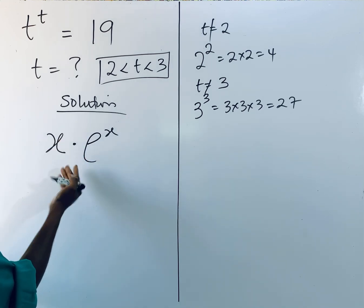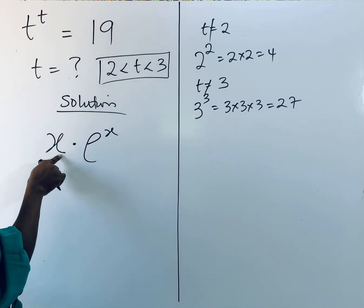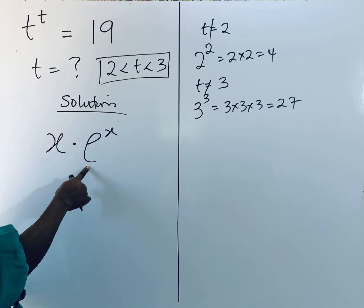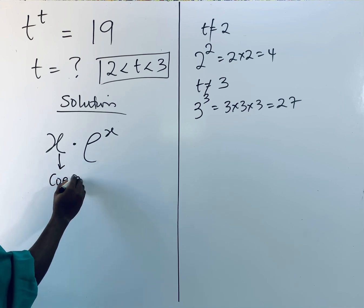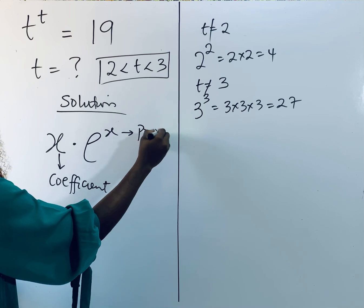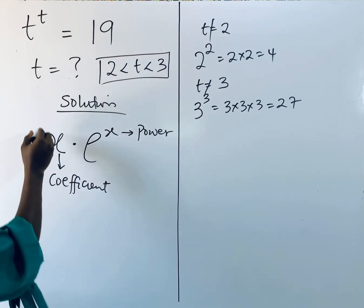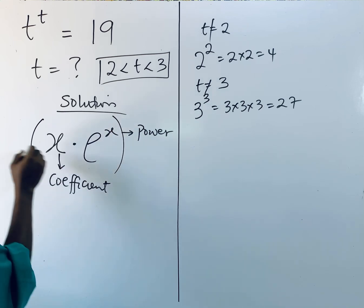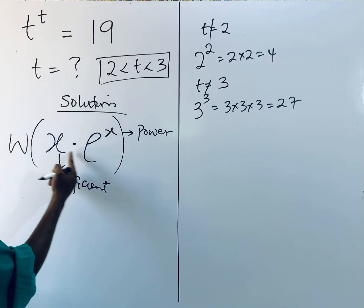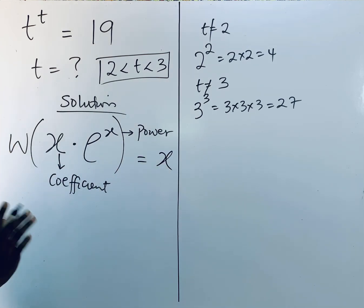It says that each time you have x multiplied by e to the power of x, this can be a function. Now when you have it this way, provided that the power of this e is the same with the coefficient of this e—remember this is the coefficient and this one is the power—when the power and the coefficient are the same, just quickly introduce your Lambert W function. And when you do this, it gives you x.